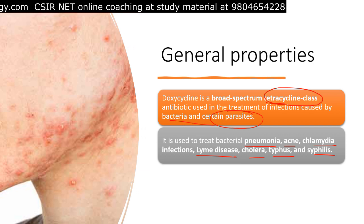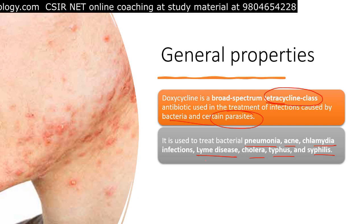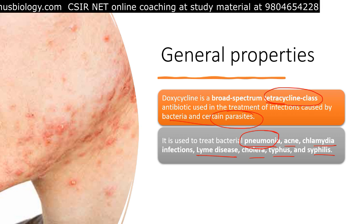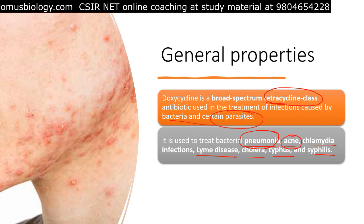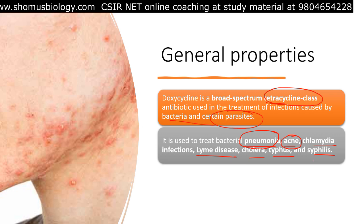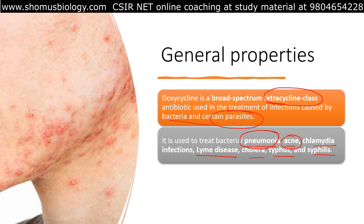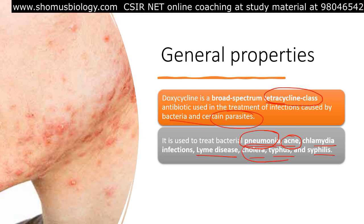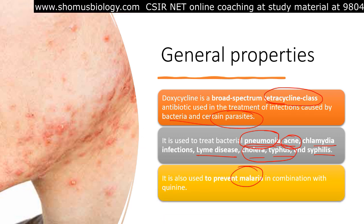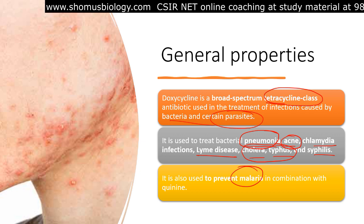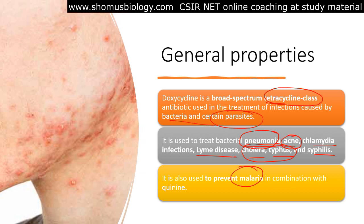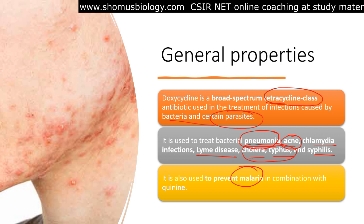We're using doxycycline for the treatment of three different kinds of infections. One is respiratory tract infection, that is pneumonia. The second type is a skin infection like acne, and the third type is an STD — that is chlamydia, syphilis, Lyme disease and related. Apart from that, it can be used in cholera and typhus too. It is also used to prevent malaria in combination with quinine.